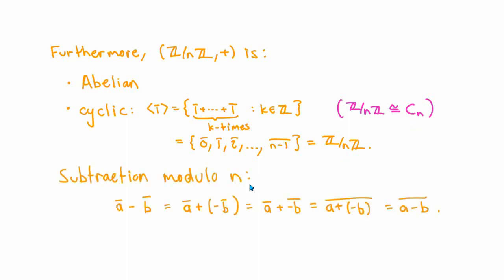Before moving on, it's worth defining subtraction modulo n in the obvious way. If we have two equivalence classes ā and b̄, we define ā − b̄ to be ā plus the additive inverse of b̄, which is ā + (-b)̄ = (a + (-b))̄ = (a − b)̄. So ā − b̄ is the equivalence class with representative a − b. This equivalence class is well defined and doesn't depend on the choice of representatives.